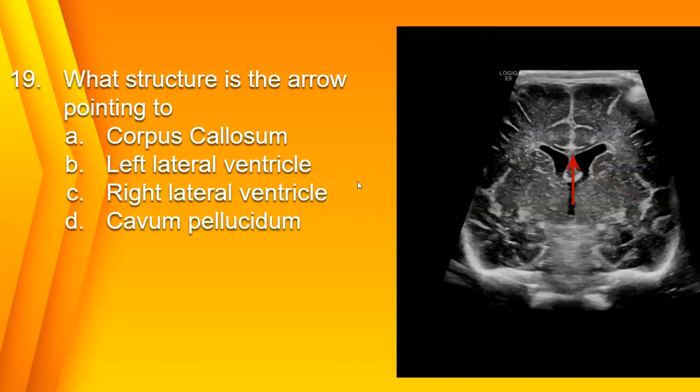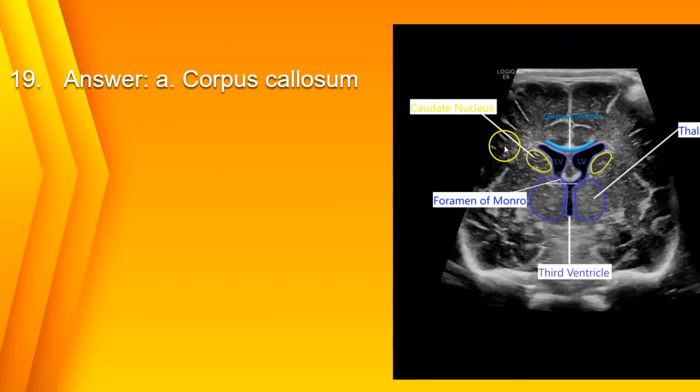Number 19 — I just answered this one in the previous question. What structure is the arrow pointing to? A. Corpus callosum, B. Left lateral ventricle, C. Right lateral ventricle, or D. Cavum septum pellucidum? The answer is A. Corpus callosum. Here again you have your corpus callosum, interhemispheric fissure, and superior sagittal sinus.